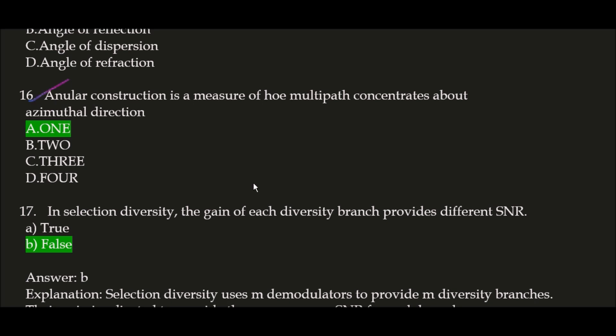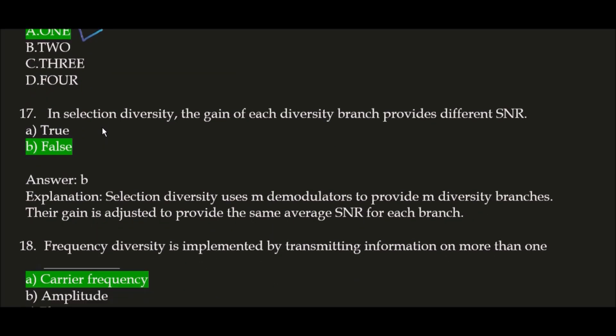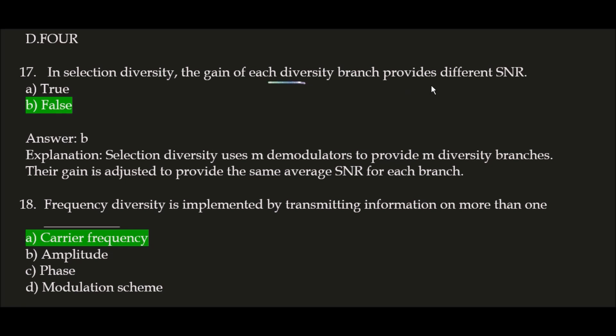Angular constriction is a measure of how multipath concentrates above the azimuthal direction; the correct answer is 1. Next question: in selection diversity, the gain of each diversity branch provides a different signal-to-noise ratio — is this true or false? It is false, because selection diversity uses m demodulators to provide m diversity branches, and their gain is adjusted to provide the same average SNR for each branch.